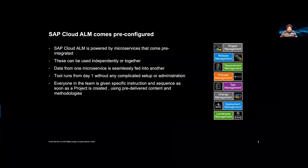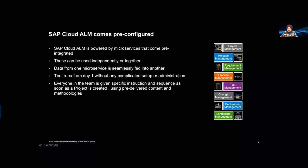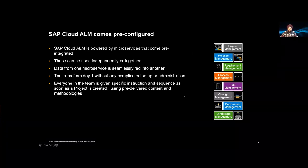SAP Cloud ALM comes pre-configured, but what are its building blocks? On the right side you see: project management, release management, requirement management — and this list is by design unordered, meaning you can use individual capabilities as you wish. For example, you might say you have everything set but need a tool that brings manual testing and automation testing together — that's fine. The tool supports both individual component use and the full end-to-end value proposition.